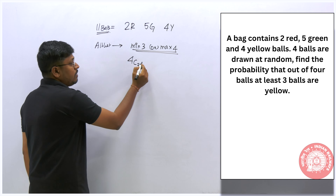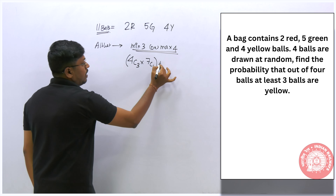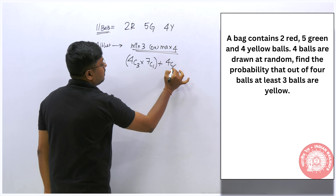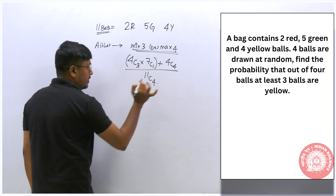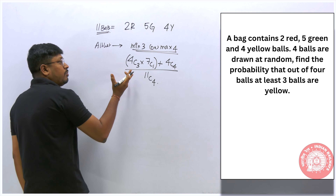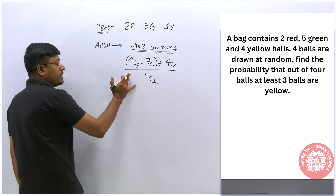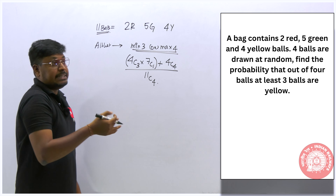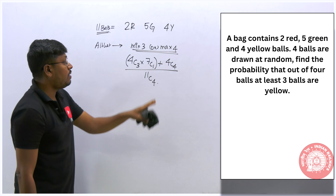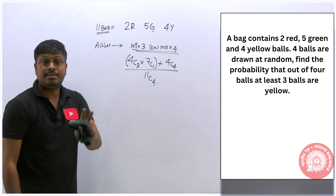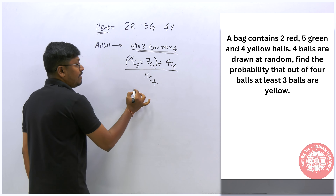There are 4 yellow balls. Minimum 3 can be yellow and the remaining 1 can be any other color (green or red), or all 4 can be yellow. So the favorable cases are: (4C3 × 7C1) + (4C4). The denominator is the total ways to pick 4 from 11, which is 11C4. Important probability keywords: at least, at most, either/or, neither/nor, none, all — know how each affects the calculation.